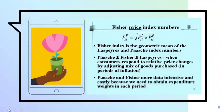Now going on to the Fischer's price index number. It is the geometric mean of the Laspier's and Paasche's index number. Paasche's is less than or equal to Fischer's index number which is less than or equal to Laspier's index number.